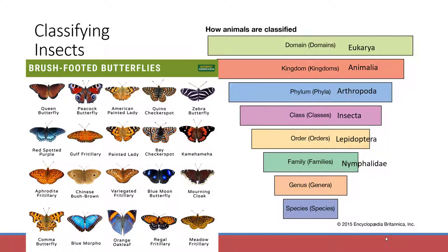Monarch butterflies are within the order Lepidoptera, in the family Nymphalidae — these are all brush-footed butterflies, and there's huge diversity even within just this family. There are well over 750 different families of insects, so if you're sending an insect to an entomologist to be identified down to species, it's very difficult. I can probably get you the family of most insects; I can certainly get you the order. Family gets a little more difficult, and genus and species is even more troublesome.